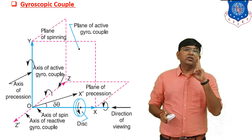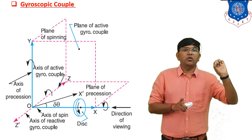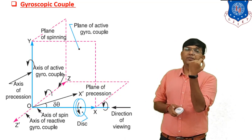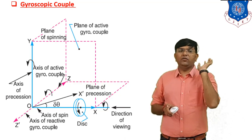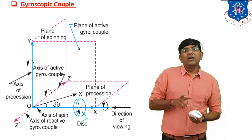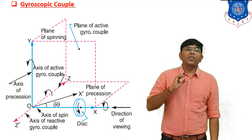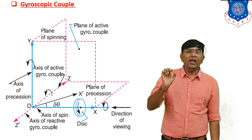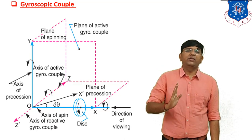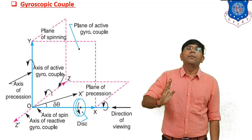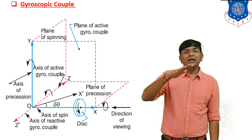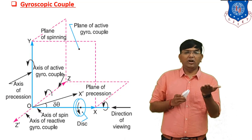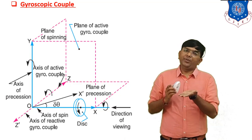The positive axis indicates the active gyroscopic couple, and the negative axis indicates the reactive gyroscopic couple. There are also three planes: the first is the plane of spinning, the second is the plane of the active gyroscopic couple, and the third is the plane of precession.